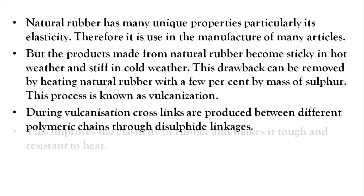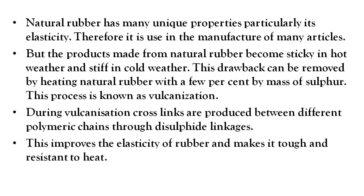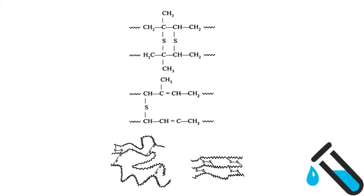Cross-links are formed through disulfide linkages, which improves the elasticity of rubber and makes it tough and heat resistant. In vulcanized rubber, these disulfide linkages create cross-linking between the polymeric chains.